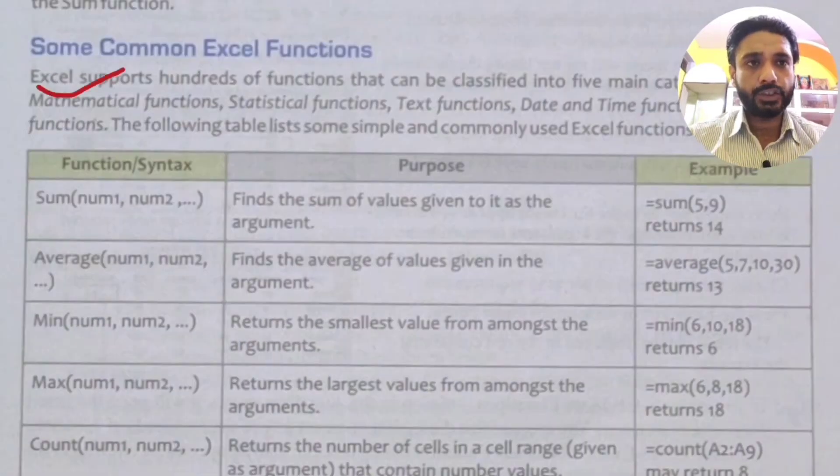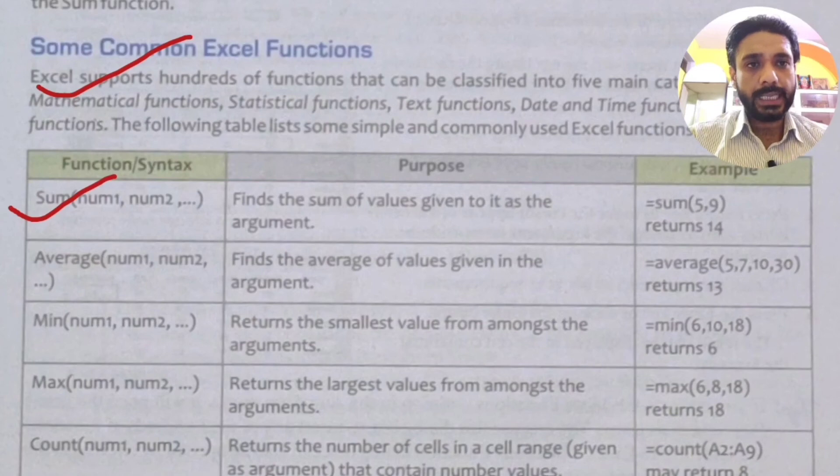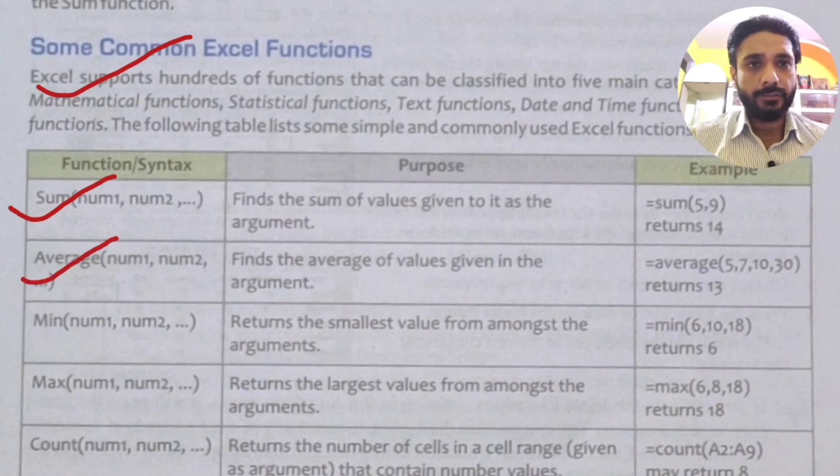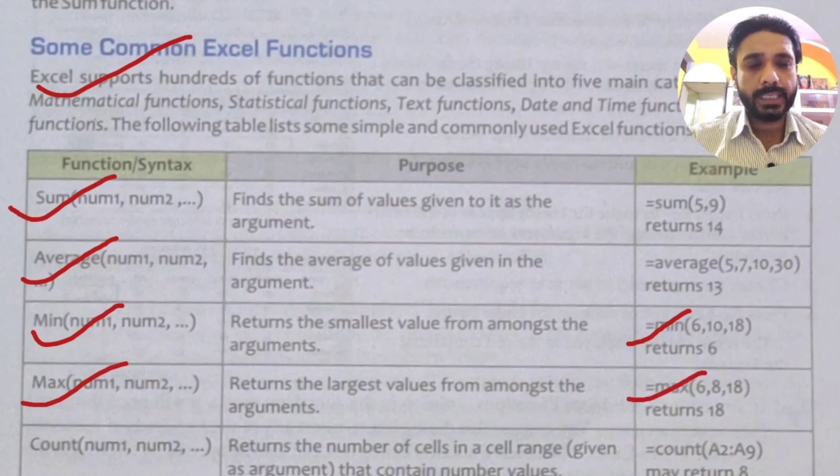Next heading, some common Excel functions. Some common Excel functions are given in Excel. We will also implement them in the next class. The first function is sum. I have already told you in the practical class. What is the use of sum function? It finds the sum of values given to it as the argument. We will use the sum of values given in the argument. Then, average finds the average of values given in the argument. Then, min returns the smallest value from amongst the arguments. We have in the argument the smallest value find out. Then we will use the min function. Same, max function returns the largest value from amongst the arguments. Next, count function returns the number of cells in a cell range.